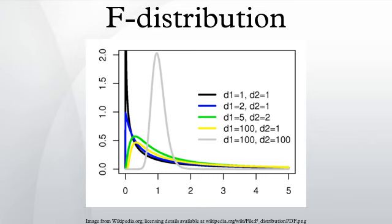If x_p is the quantile p for X ~ F(d1, d2), and y_{1-p} is the quantile 1-p for Y ~ F(d2, d1), then x_p · y_{1-p} = 1.